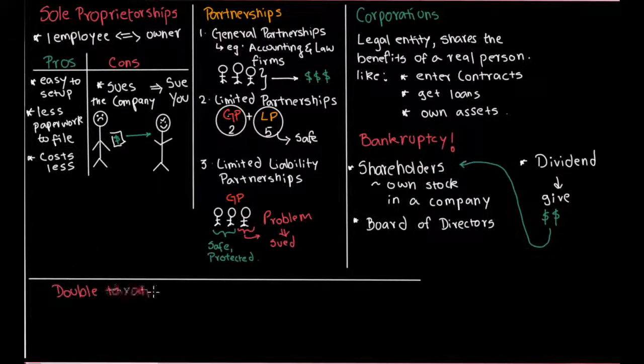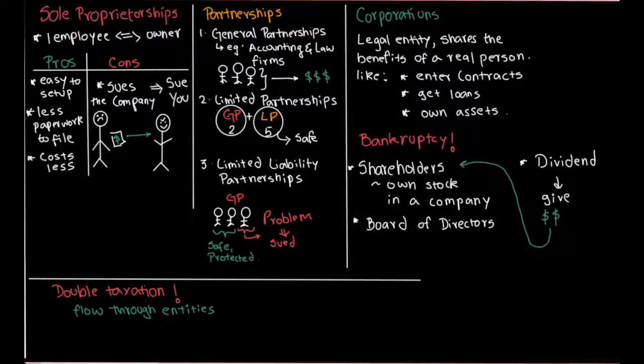So what happens is the corporation pays tax and after, the rest of the money, some of it goes to the corporation's savings account and some of it goes back to the shareholders. Now this creates a huge problem of double taxation and a lot of people want to avoid that. So here is a very cool thing that can help you to get away from that, so that you don't have to pay double tax. You can only pay one time.